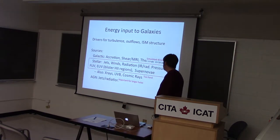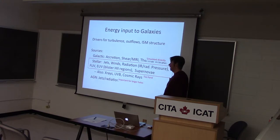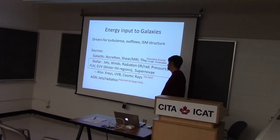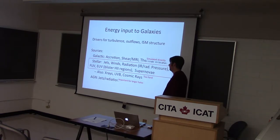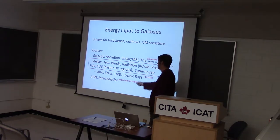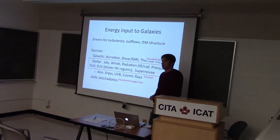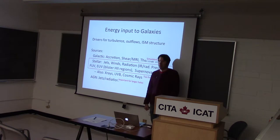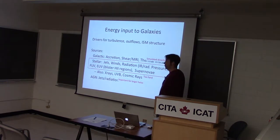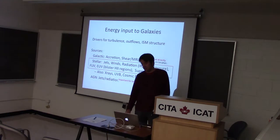I'm going to focus on the middle area — what's coming from stars — because this is strongly coupled to the star formation process itself and something that we really need to include if we want to regulate our star formation. I will point out that X-rays, UV, and cosmic rays may be important. People write papers every now and then arguing they are, but they're very hard to do numerically for various reasons and so for the most part they're being ignored by the community.